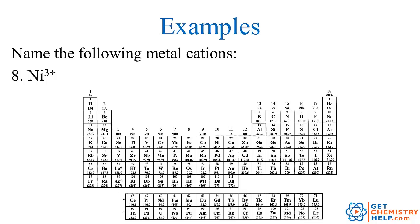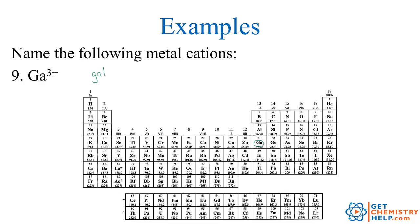How about Ni 3 plus? Ni is nickel. Nickel is not in group 1, not in group 2, and not in the magic triangle, so it can vary. We have to specify which nickel — since it's 3 positive, we use Roman numeral III. We call it the nickel(III) ion. How about gallium 3 positive? Gallium is in the magic triangle, so it's always 3 positive and doesn't need a Roman numeral. We just call it gallium ion.